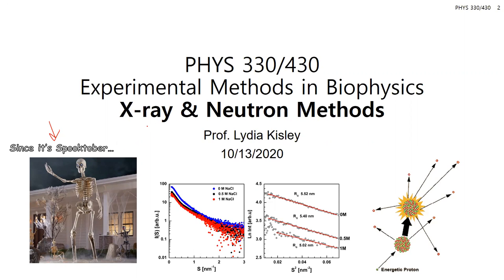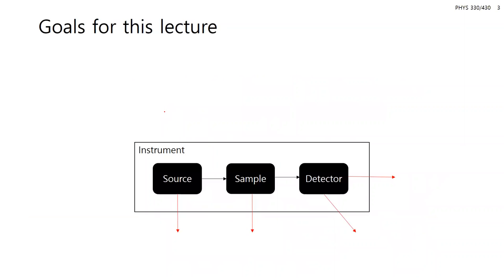Getting into these techniques — since they are more specialized, especially with the sources for x-rays and neutrons — I think it's worth having a lecture on these methods. Today's goals are to get into details with x-rays and neutrons. If you remember, the wavelengths for x-rays and also neutrons get us to atomic level resolution — 0.1 to 25 angstroms are possible with these methods.